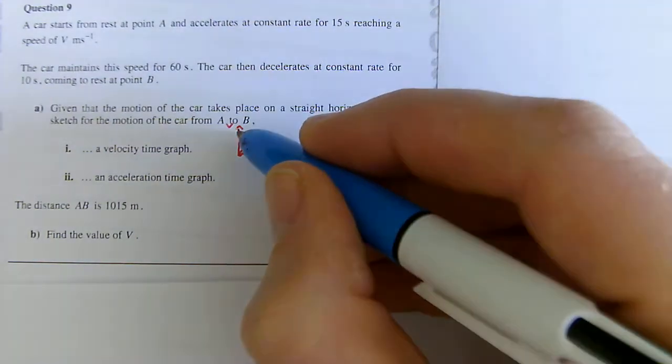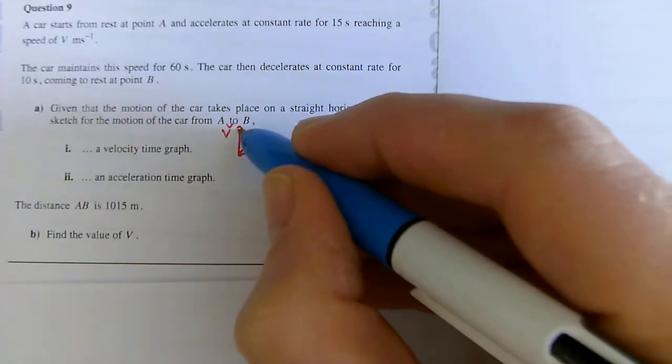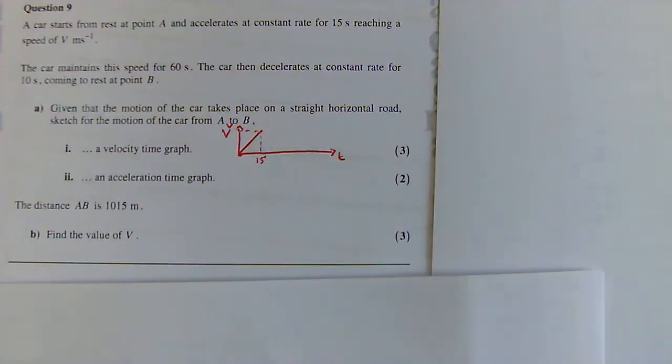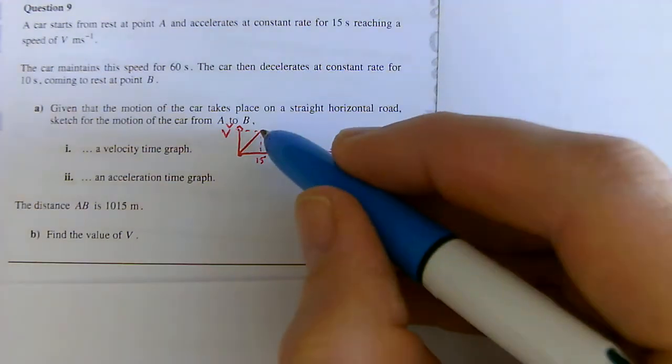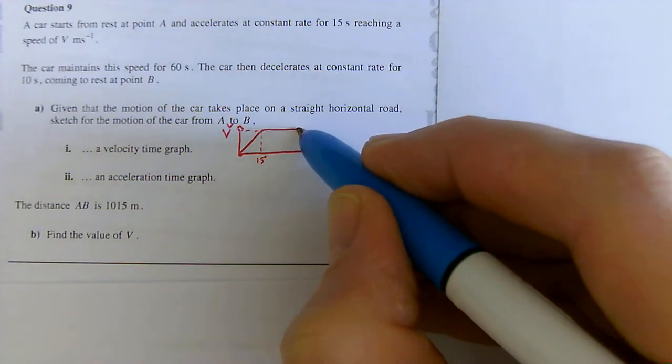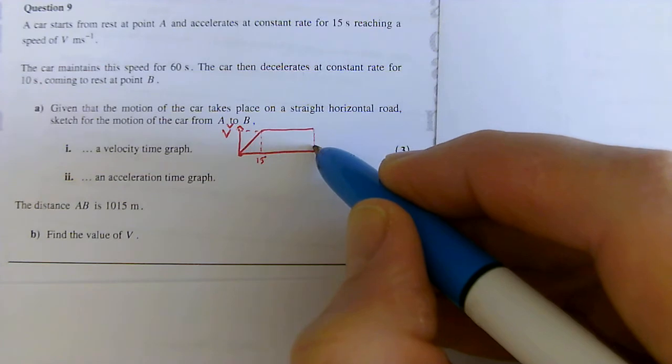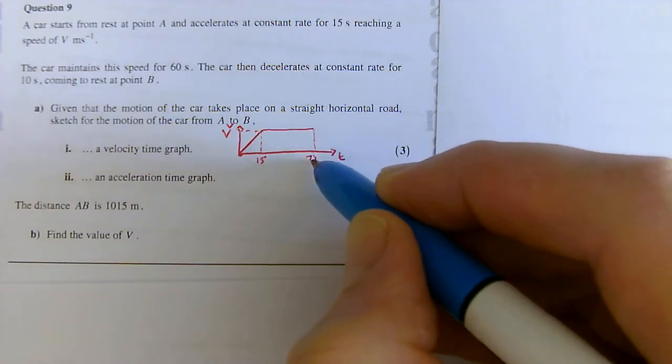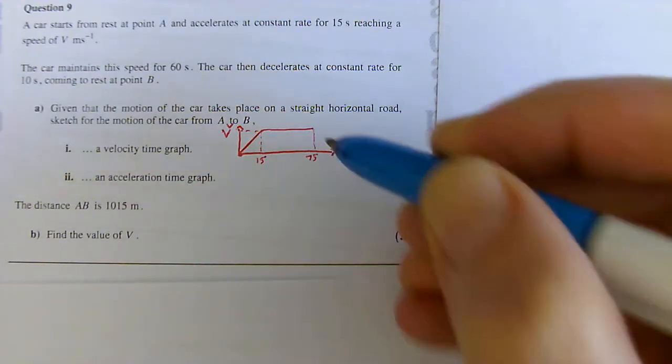And it reaches a speed of V, so I ought to just make sure there's my capital V. Okay, and it maintains the speed for 60 seconds, so 60 maintains speed, which means the velocity remains constant, and that's going to be until it gets to 75 seconds. This 15 plus 60 gives me my 75.